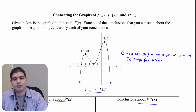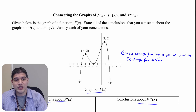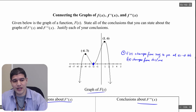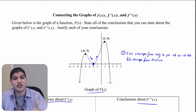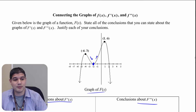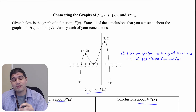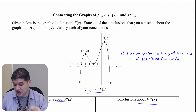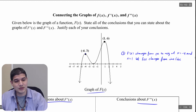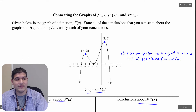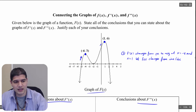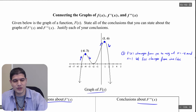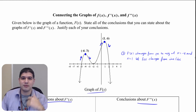F prime is switching from negative to positive at x equals negative 2 because f is changing from decreasing to increasing there. Similarly, f prime is changing from positive to negative at x equals negative 4 and at x equals 1, because f is changing from increasing to decreasing at both of those points.